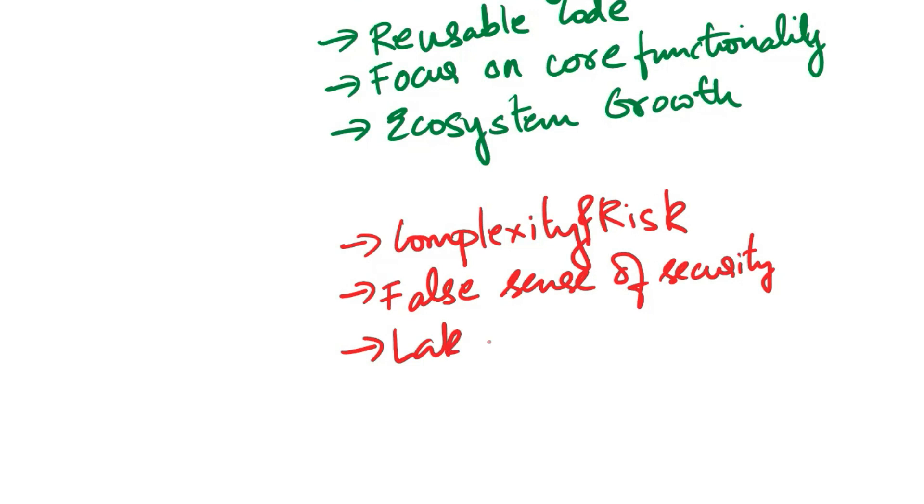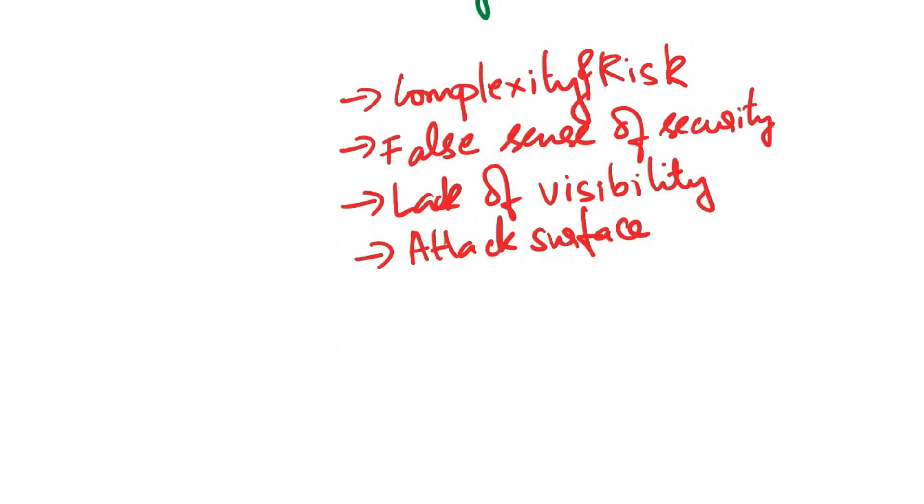Next risk is lack of visibility. In some cases, developers may not be aware of all the third-party libraries used in their project, making it challenging to assess and address vulnerabilities comprehensively. Also, it increases the attack surface. That is, the more third-party dependencies a software project has, the larger the potential attack surface becomes. Each dependency represents a potential vulnerability that attackers can target.